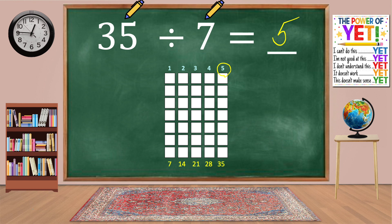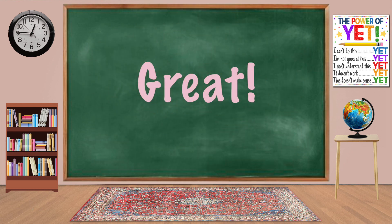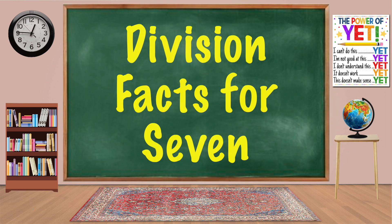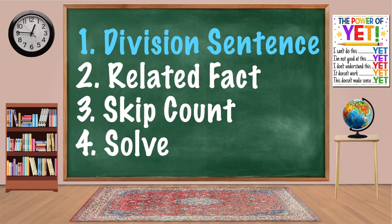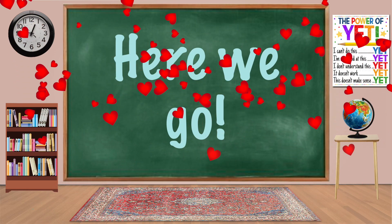So 35 divided by seven gives us five. That was a great example. Now let's go through the division facts for seven. First we'll look at the division sentence, then we'll set up our related fact. We'll skip count and count the columns, then solve the related fact and the division sentence. Here we go.